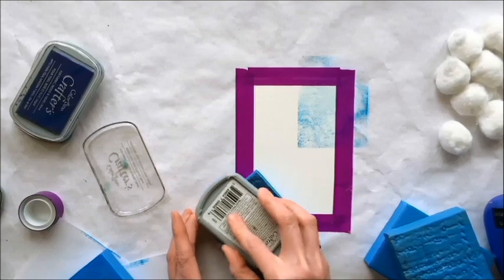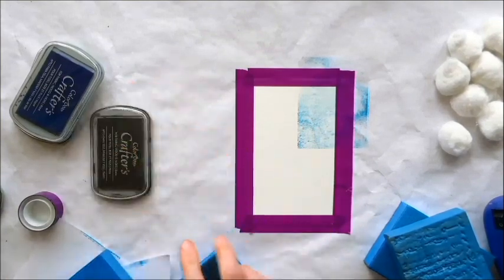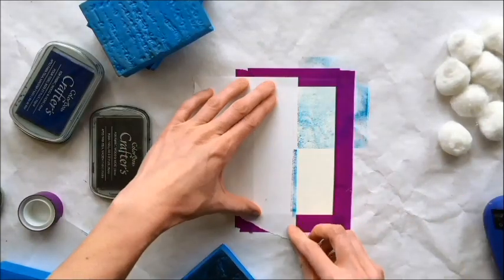So I'm inking up the blue shades. We have Ocean, Breeze, and Wave. And then I'm inking up the rocks with Stone, which is appropriate, of course.